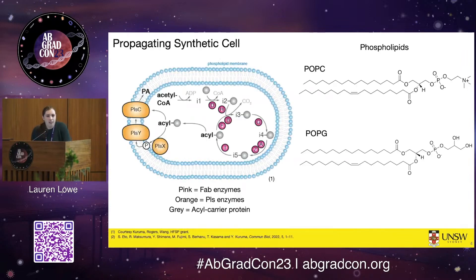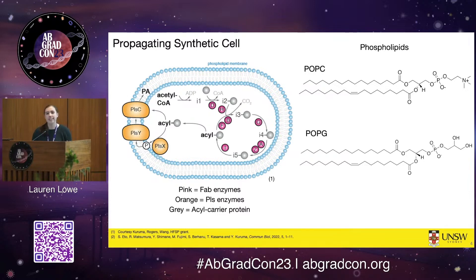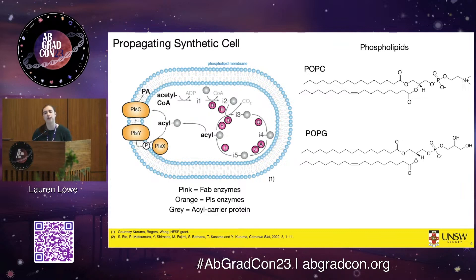I'm trying to answer this question by building a propagating synthetic cell — basically an artificial cell that is able to feed itself, grow, and divide — and I'm trying to achieve this using the simplest components possible to understand how life transitioned into what we know it as today.